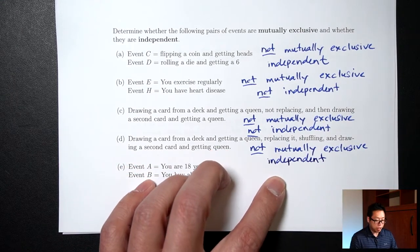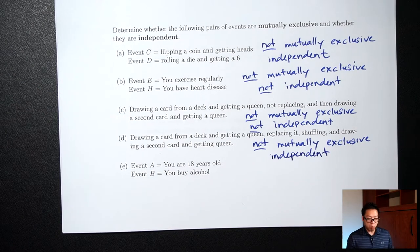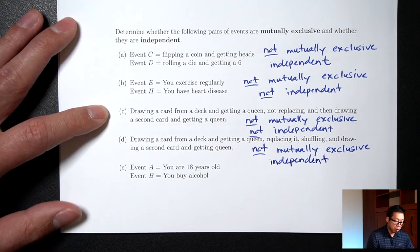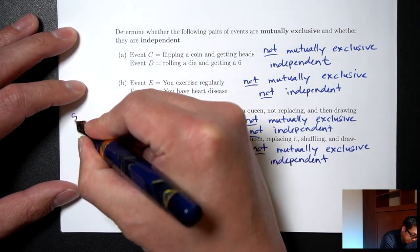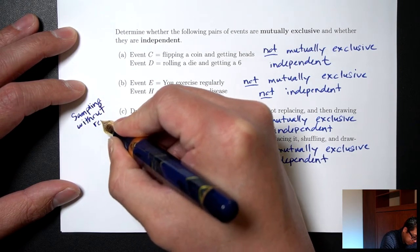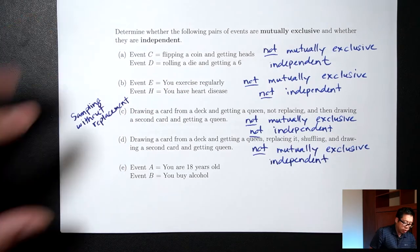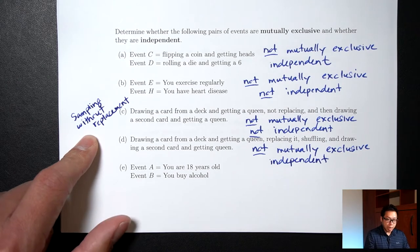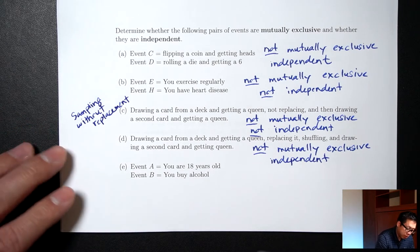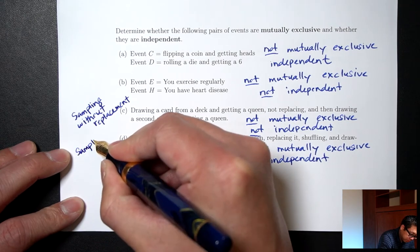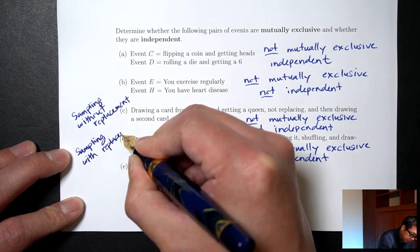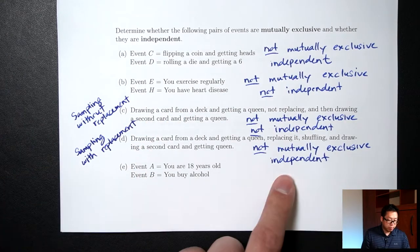These two examples are pretty important in statistics. Part C — where you pick and don't put the card back — is called sampling without replacement. Part D — where you pick and then put it back and reshuffle — is called sampling with replacement. If you are sampling with replacement, the draws are independent.